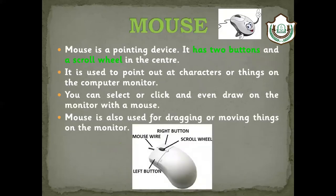Mouse. The mouse is a pointing device. If you want to open something in any folder, you use it. It has two buttons and a scroll wheel in the center.